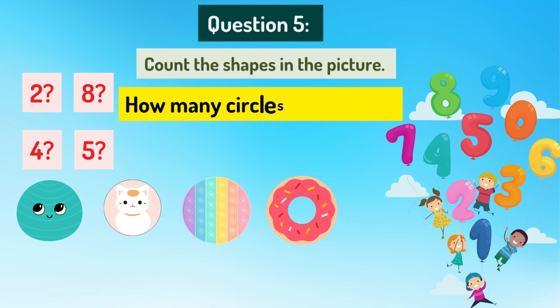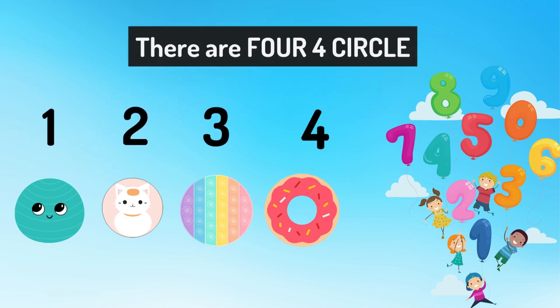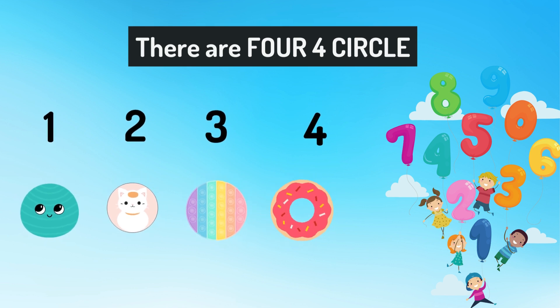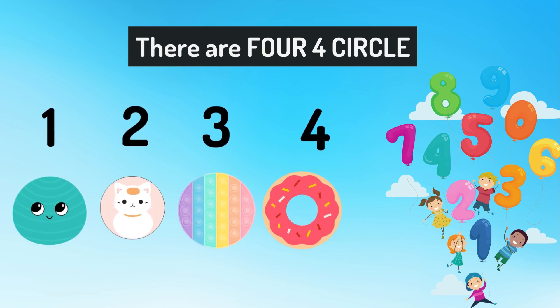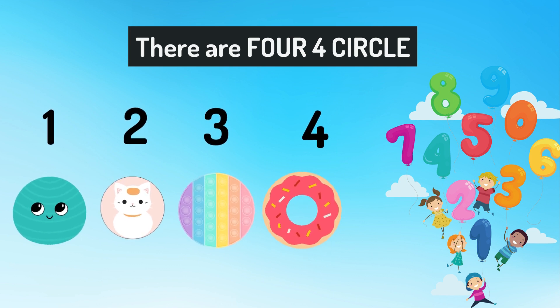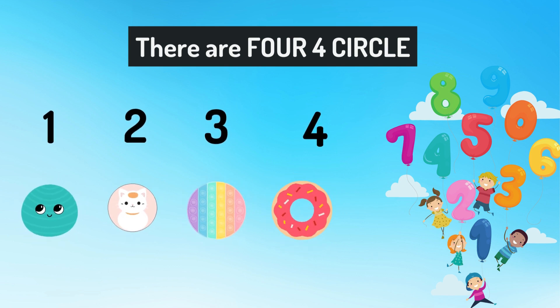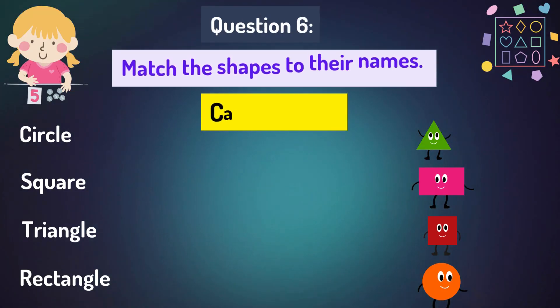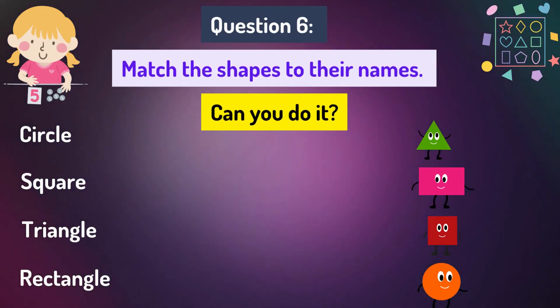Move on to question 5. Count the shapes in the pictures. How many circles do you see? Two, eight, four or five? Good job! There are four circles. Starting from left to right: one, two, three, four.